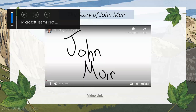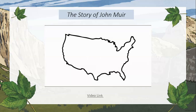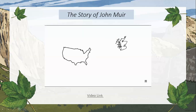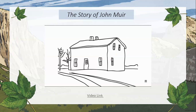On April 21st, 1838, John Muir was born in Dunbar, Scotland. In 1849, at the age of 11, John Muir and his family moved to the United States. They first settled at Fountain Lake Farm for seven years, which is in present-day Marquette County, Wisconsin. They homesteaded 160 acres, and this place is thought to be one of the first places in American culture where anyone thought to preserve nature for the sake of nature.